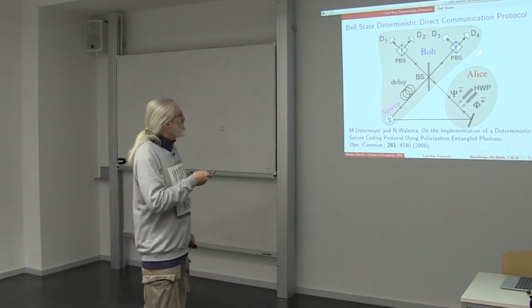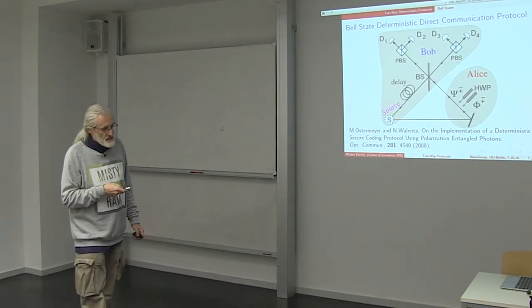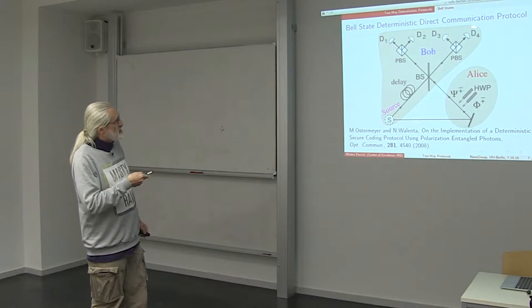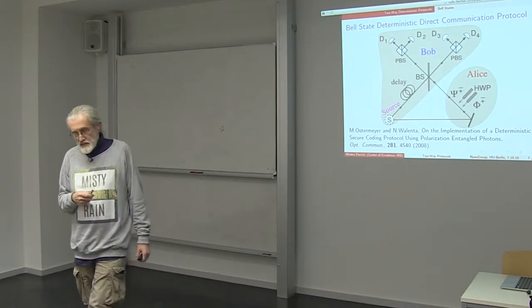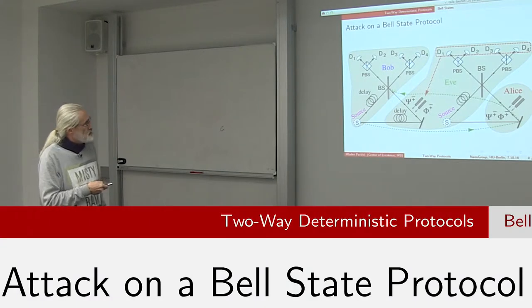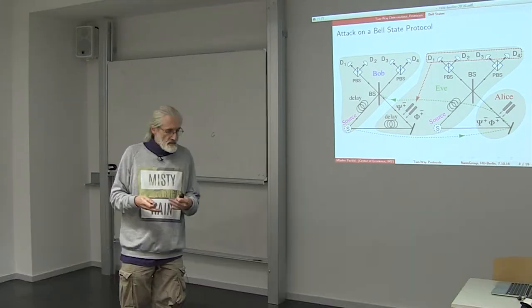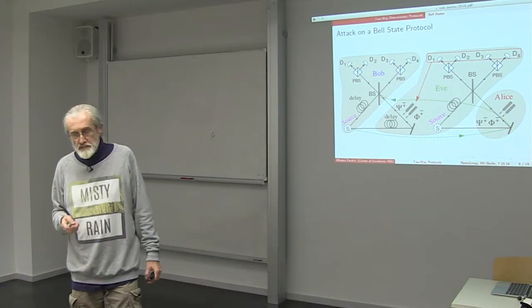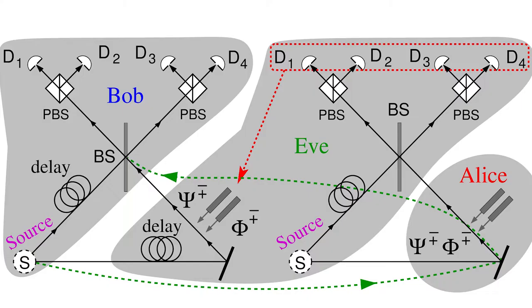She sends two new states she generated from the original Bob state, and Bob can detect these states here presented with linear elements, but with nonlinear elements all four states.